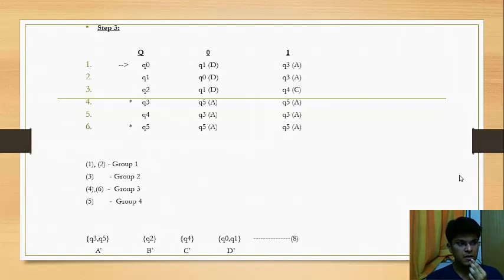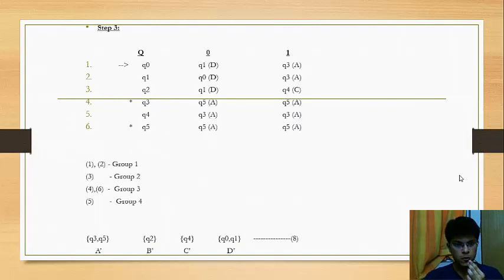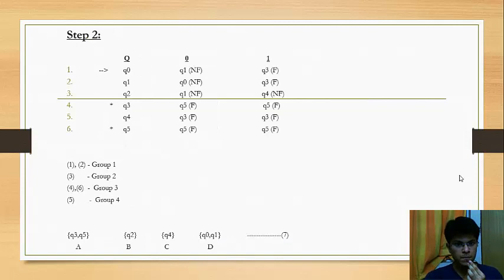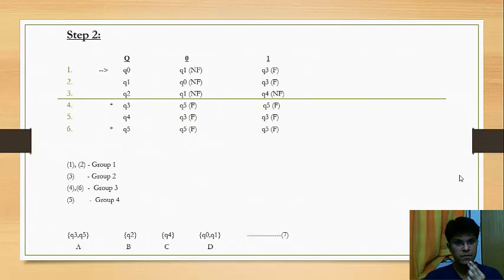Now, we redraw the table and mark the states according to their group names. We again do the same procedure and see that first and second are group 1, third is group 2, fourth and sixth is group 3, fifth is group 4. We again give each of them different names such as A', B', C' and D'. We mark this as equation number 8. Now, we see that D group and A group have the same pattern as before and same thing also happens with D group and A group in the previous step.